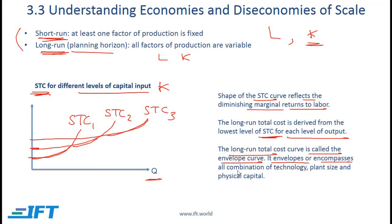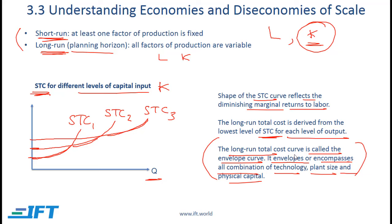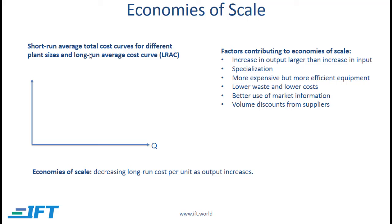The envelope curve envelopes or encompasses all combinations of technology, plant size, and physical capital. So with the short-run total cost curve we are changing labor while keeping other factors such as capital constant, but with the long-run total cost curve all factors of production are variable. Now let's move from total cost curves to average total cost curves — that is, total cost divided by quantity.